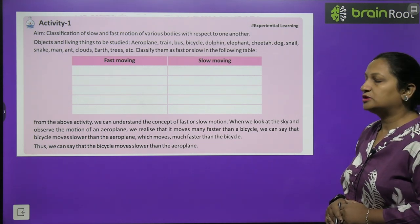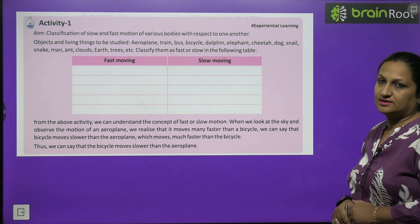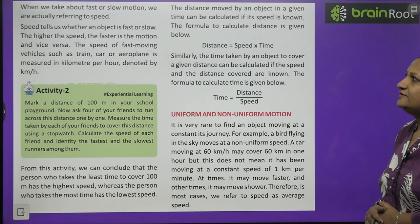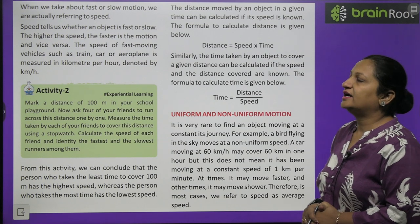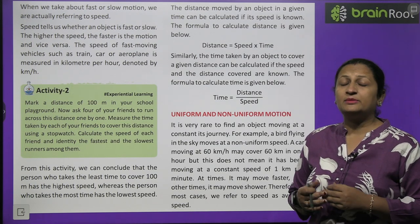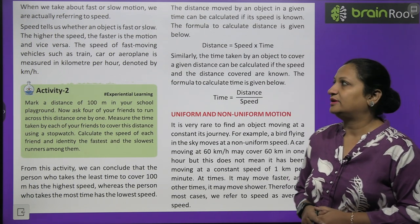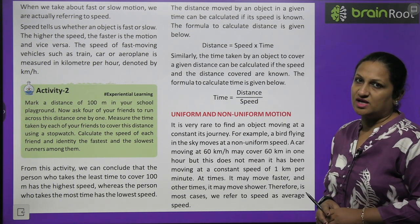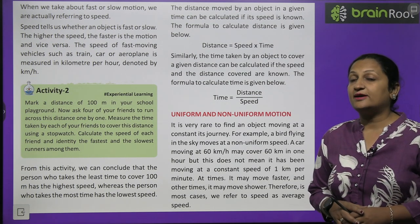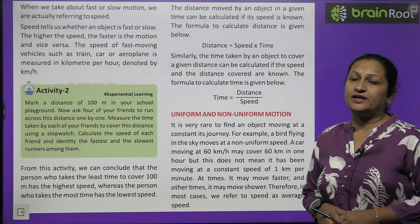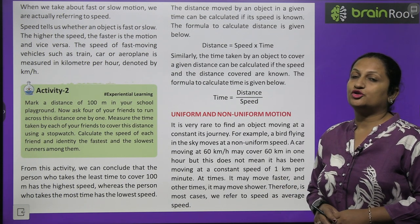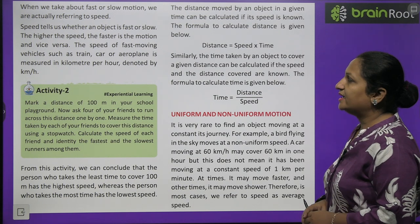When we talk about fast or slow motion, we are actually referring to speed. We talk about how much distance we have traveled in how many units of time. Speed tells us whether an object is fast or slow. If we cover a lot of distance in less interval of time, our motion is fast. The higher the speed, the faster the motion, and vice versa.